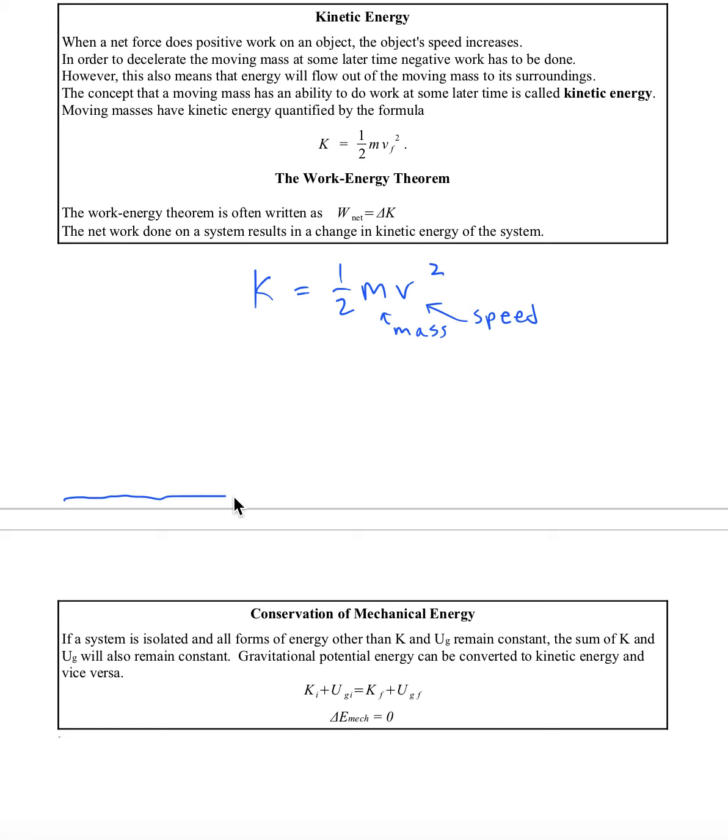Imagine an object is held at rest above ground. What types of energy does it have? It has gravitational potential energy.